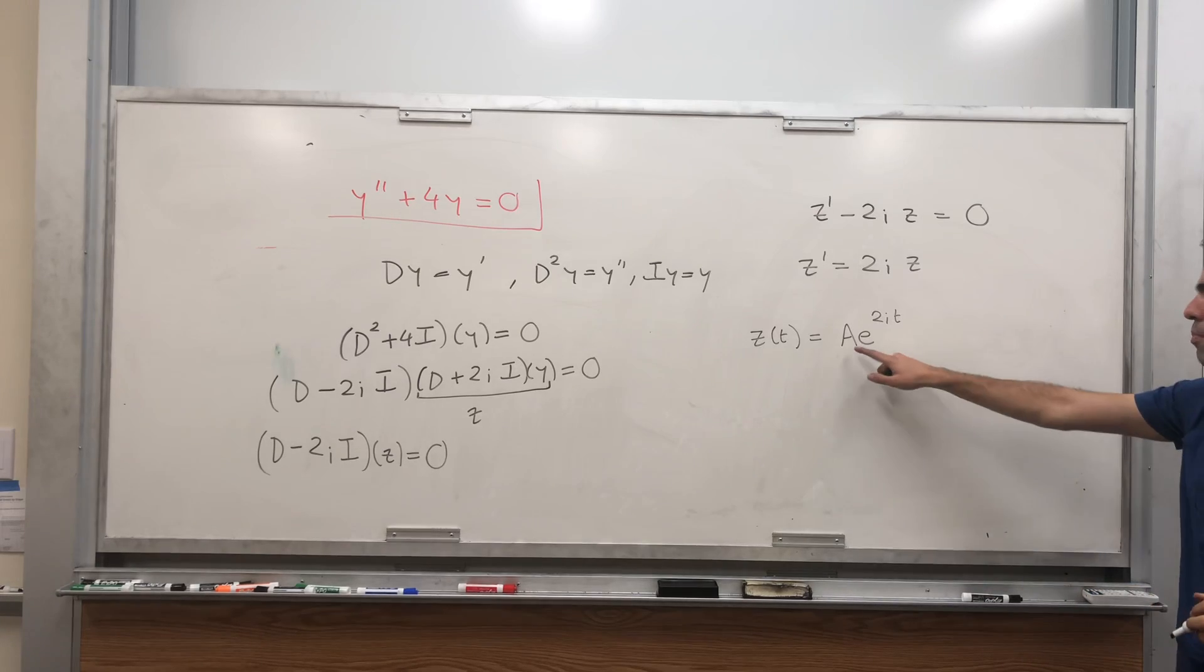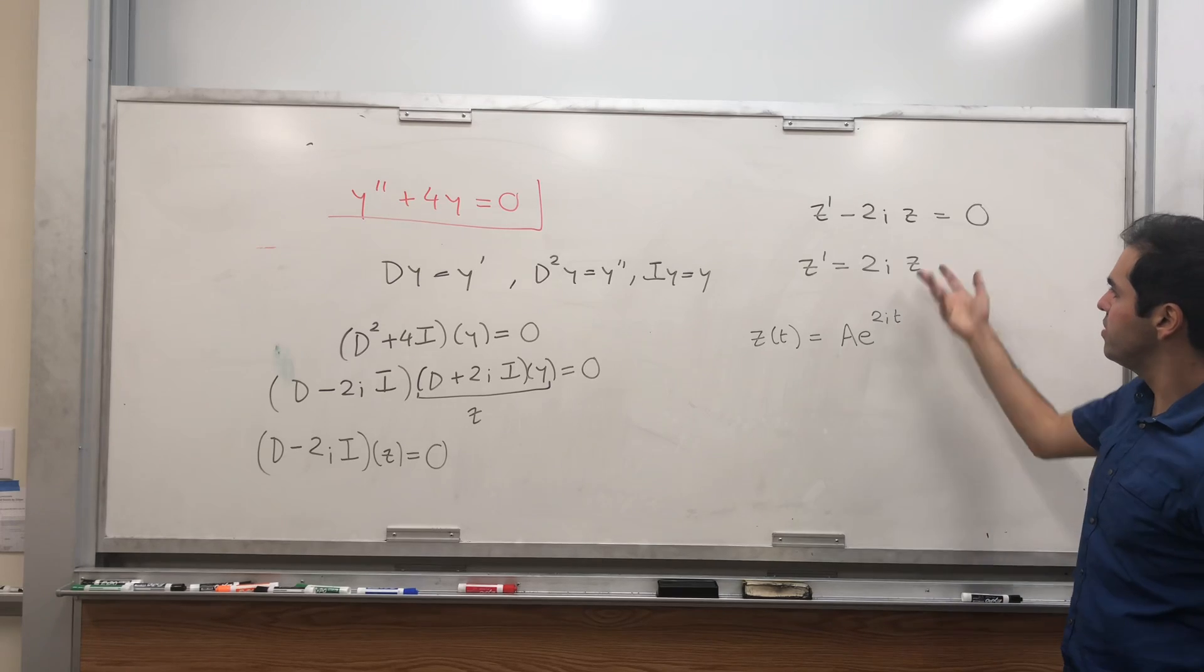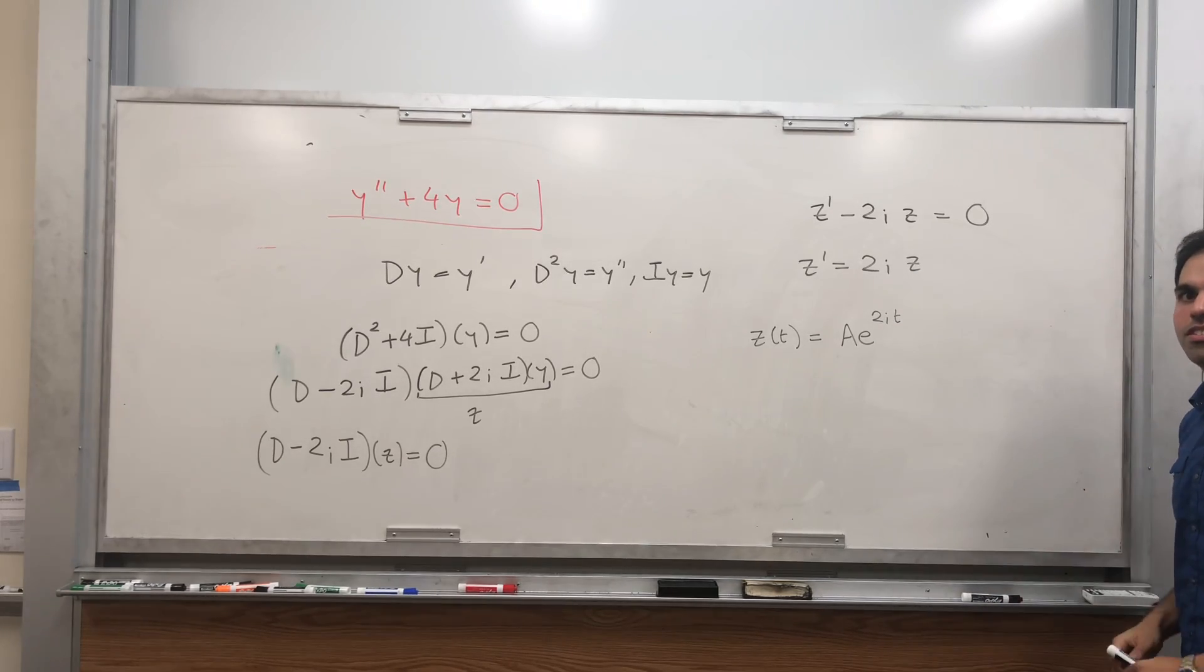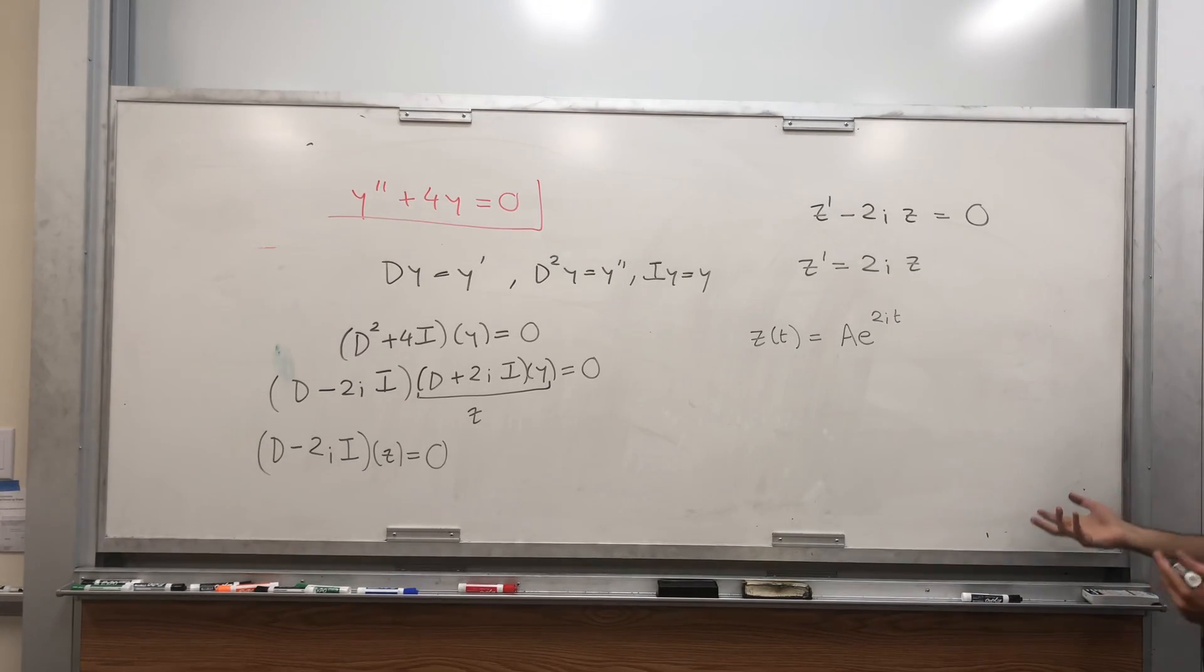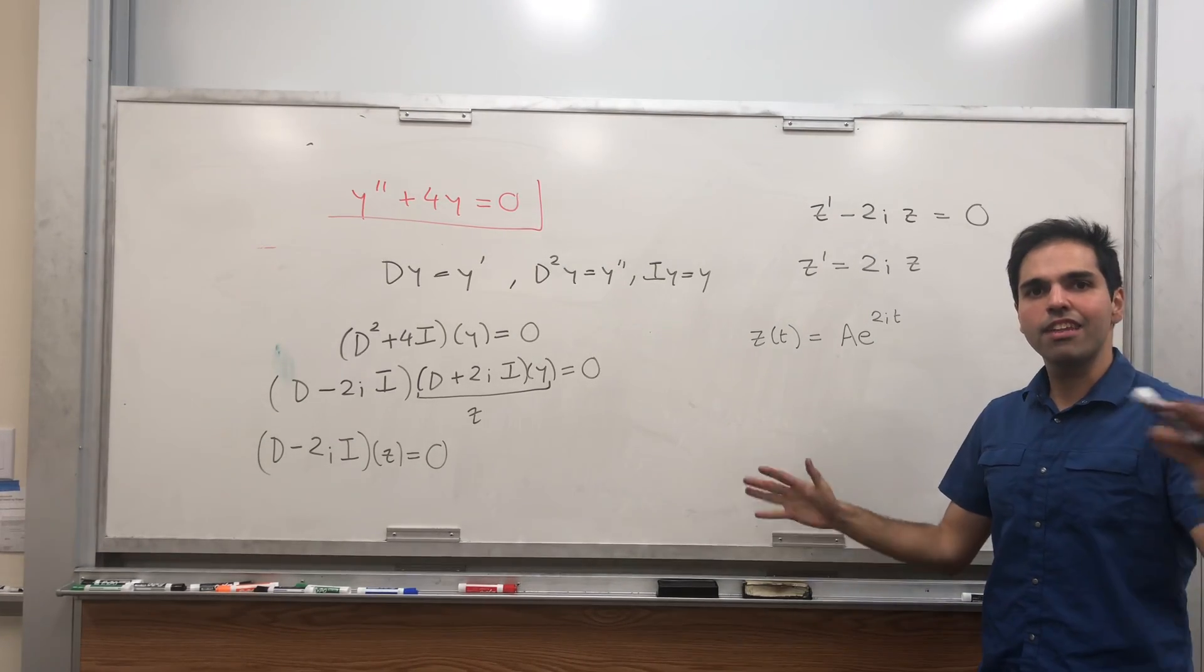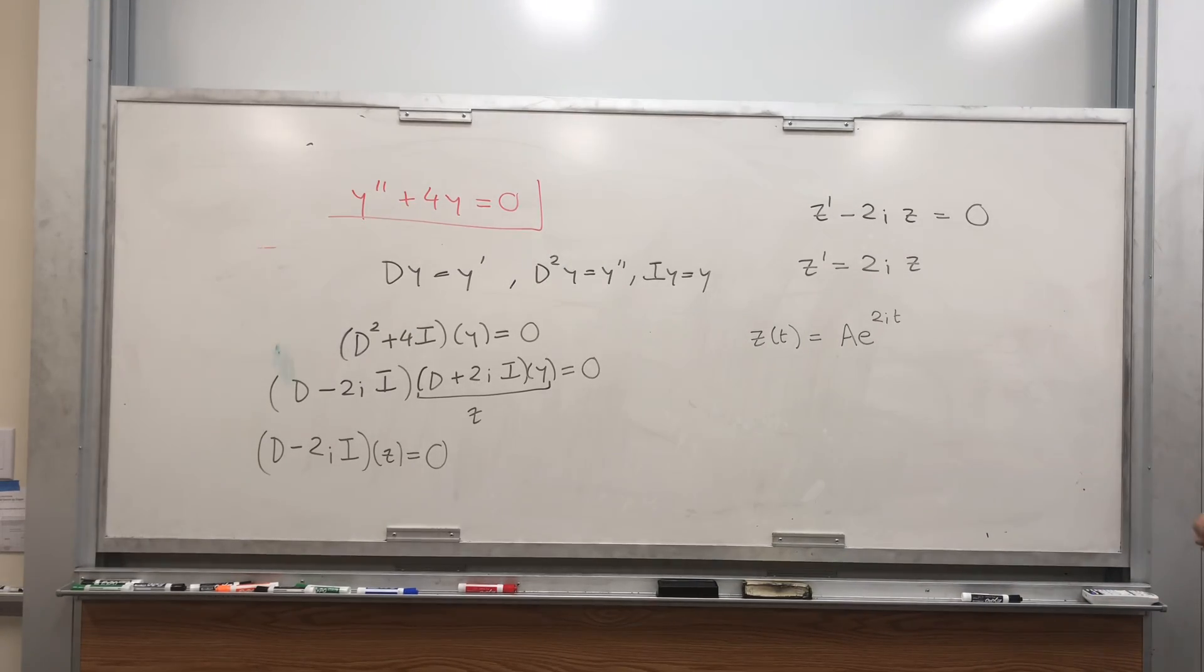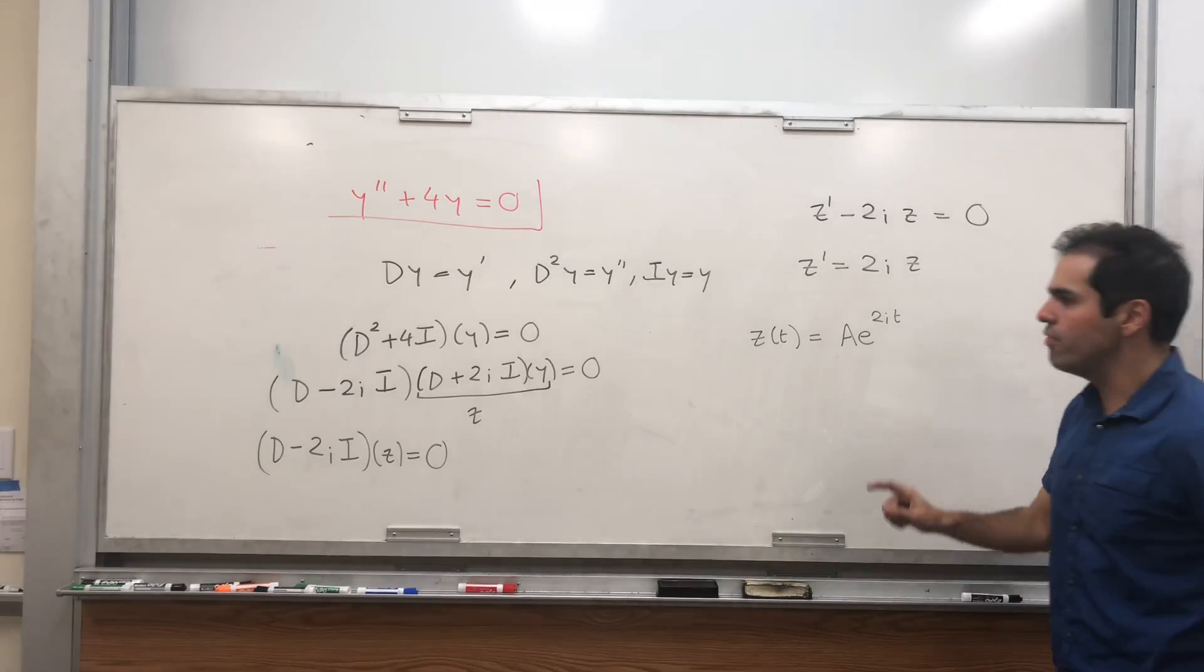And very important, A is a complex number here, basically because z could be a complex function. So in particular, if the derivative of a complex function is zero, then that function is a complex constant.